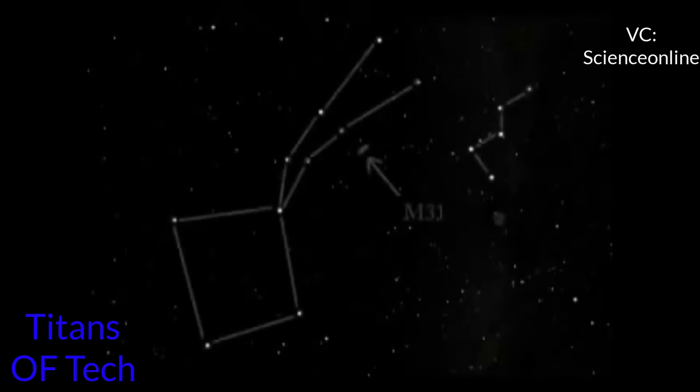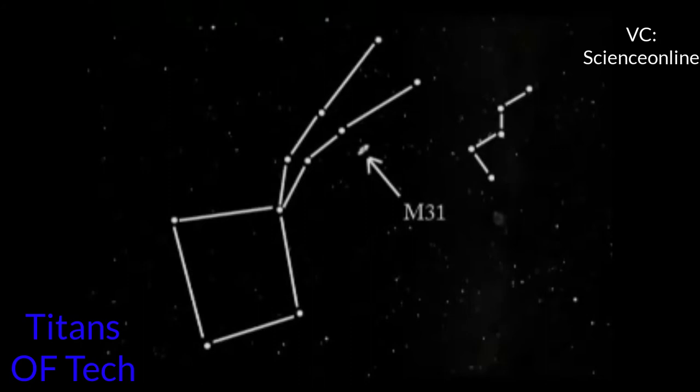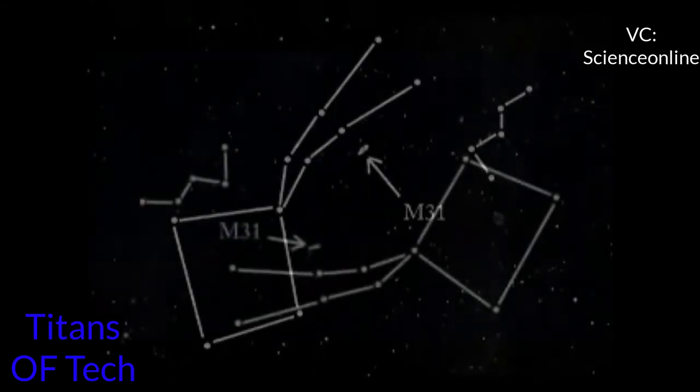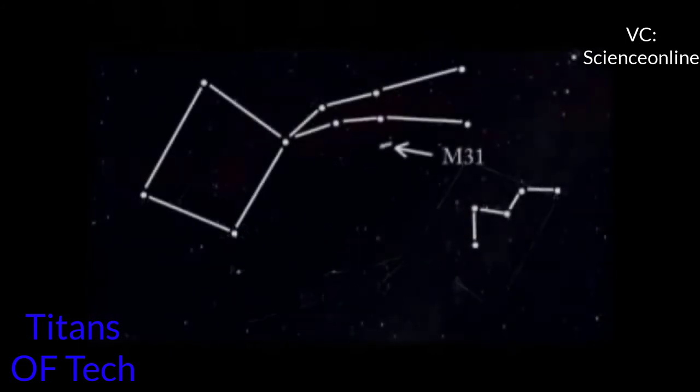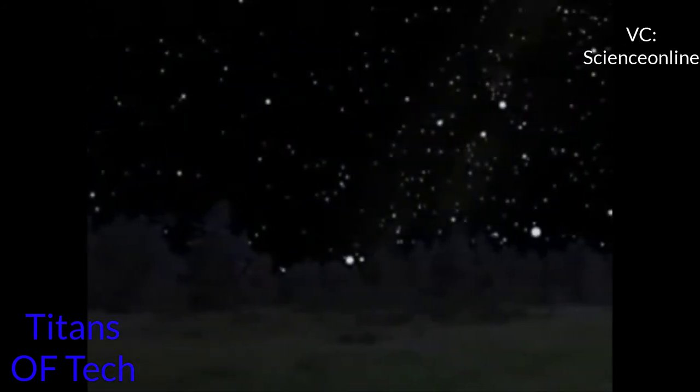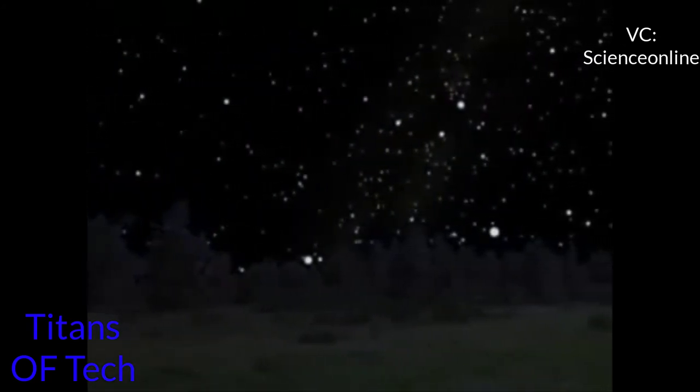The key to finding M31 is learning to recognize and find its adjacent constellations. The relative positions of Cassiopeia, Pegasus, and M31 never change, but their position in the sky does, appearing low above the east horizon in late August evenings and slowly moving to the west horizon by January. There are a number of computer programs available to help you locate objects in space. I use Starry Night.